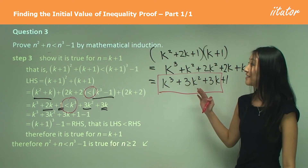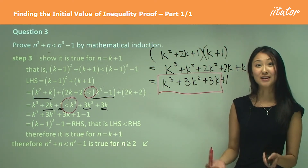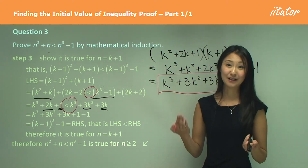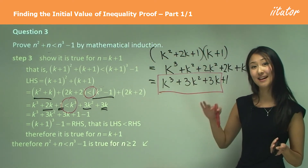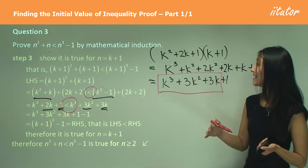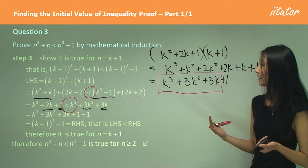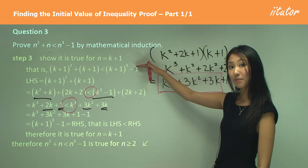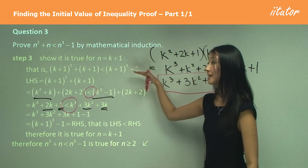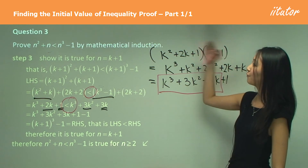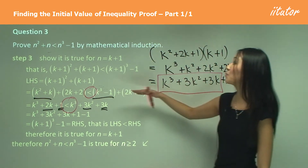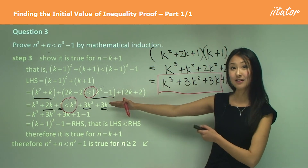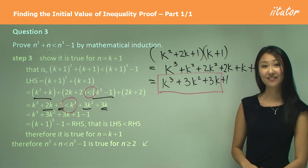The new things we learnt in this question: to find the initial value, we test starting from n equals 0 until the inequality is satisfied. Also, sometimes in Step 3 you need to go back to the original question and work from the right-hand side as well as the left-hand side, then use that information together to work out the final answer.